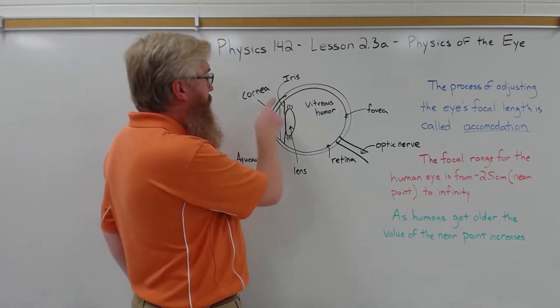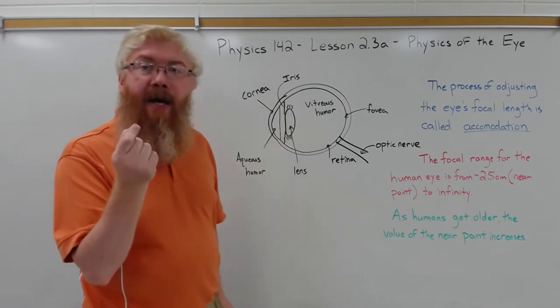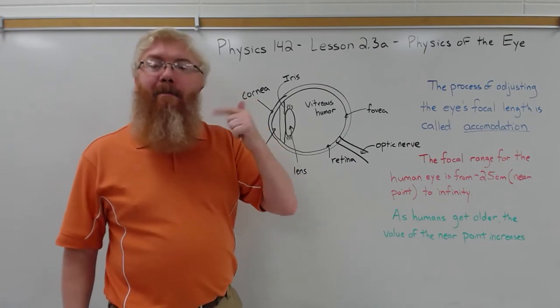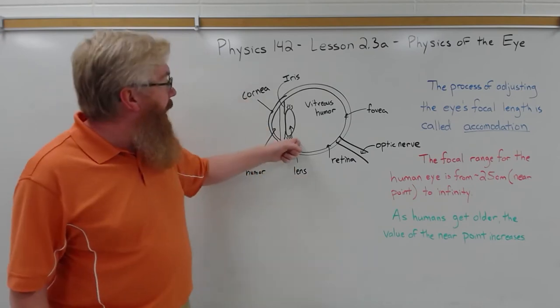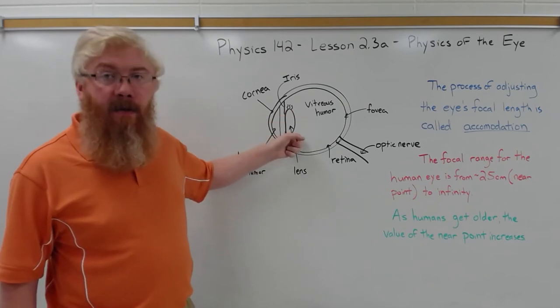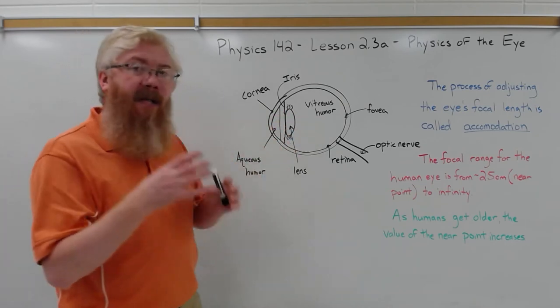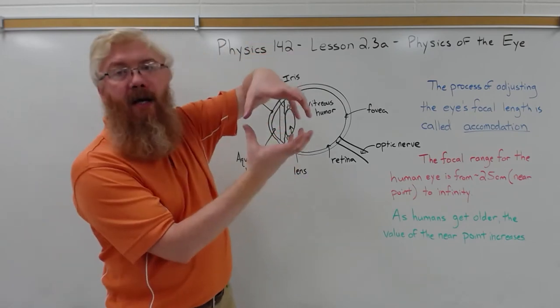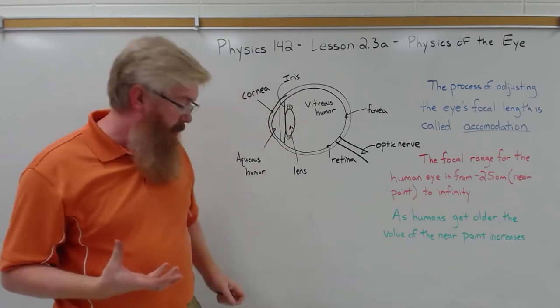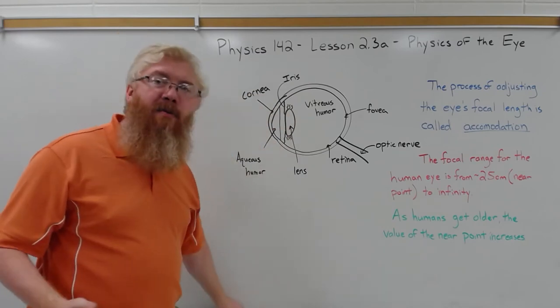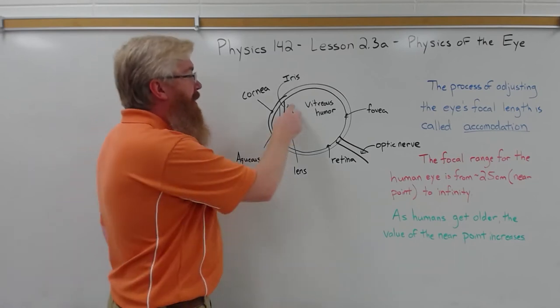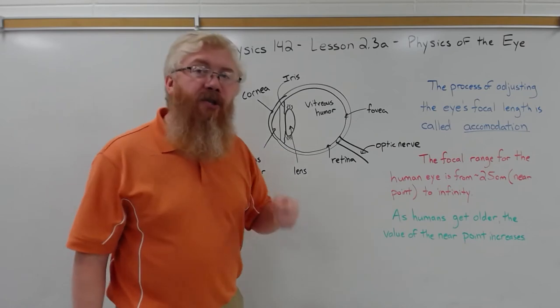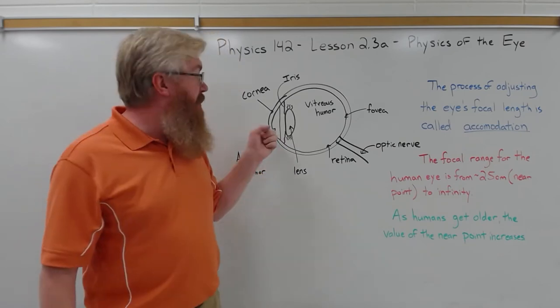Light comes in through the cornea. The cornea cannot be changed in size or thickness unless you're doing it medically, so you have no ability to reshape your cornea. But what you can do is reshape your lens. There are little tiny fibers on the lens and the lens is a flexible structure, think of it kind of like a water balloon where you can stretch it and compress it some small amount.